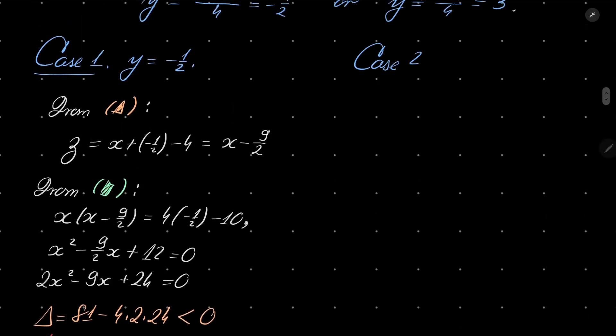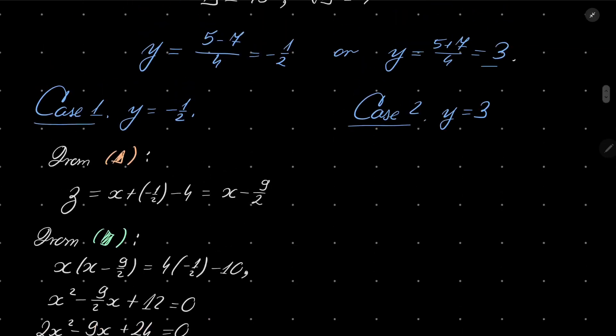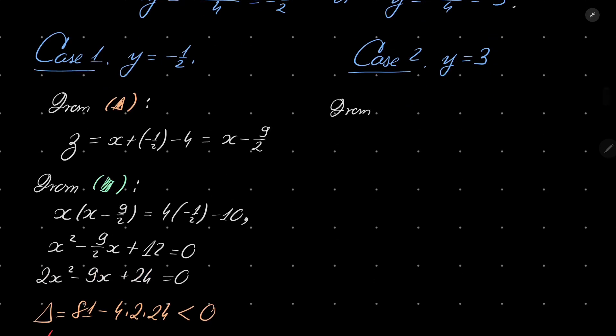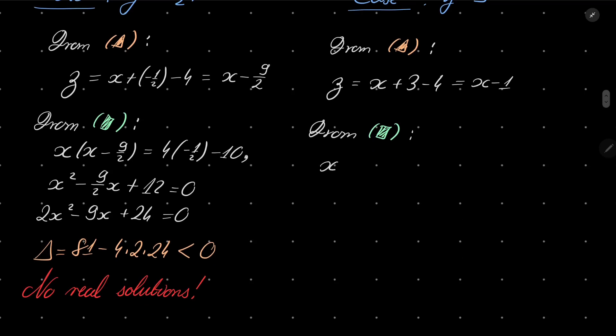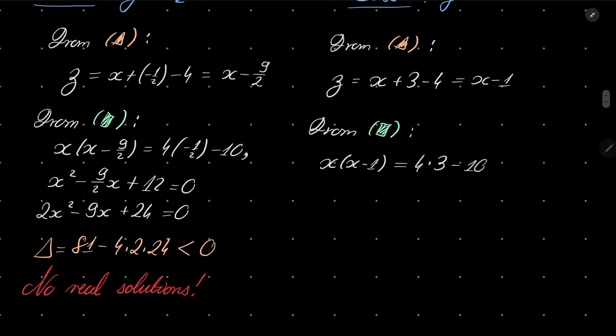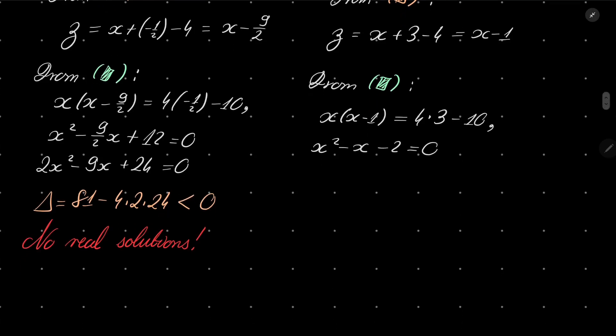Case number 2: y equals 3. From condition triangle, z equals x plus y minus 4, so z equals x minus 1. From equation square, xz equals 4 times 3 minus 10, so x times x minus 1 equals 2. This gives x squared minus x minus 2 equals 0.